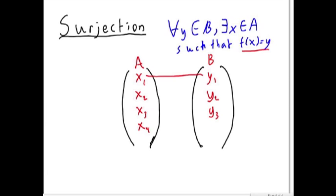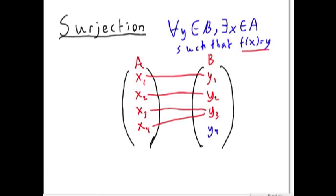So if x1 is mapped onto y1, x2 is mapped onto y2, x3 is mapped onto y3, and x4 is also mapped onto y3, this would be an onto function. Now, if this codomain contained another element y4 that wasn't mapped onto, then this function would not be onto.